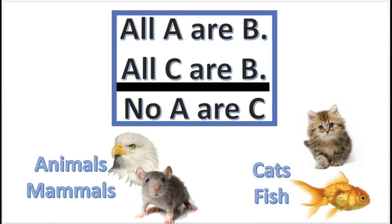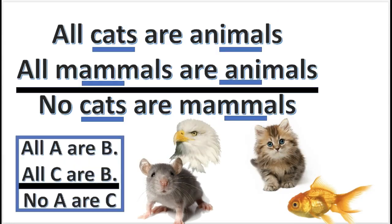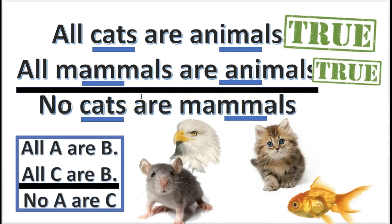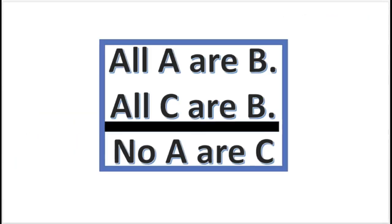Here's another invalid argument form. Swap the terms to come up with an argument to prove that it's invalid. Here's an answer that works — if you swap these letters for these terms, you would get this argument. Premise one: all cats are animals — are all cats animals? Yes, that's true. Next: all mammals are animals — are all mammals animals? Of course, that's true. Now the conclusion: no cats are mammals — is that true? Are no cats mammals? Nope, that's false. So now you know, by simply swapping out animals, mammals, cats, fish, you can prove right away that it's invalid.